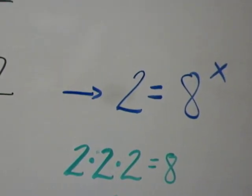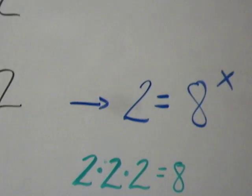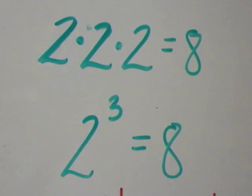Well, 2 times 2 is 4, times 2 is 8. Oh, that means I need 3 twos. In other words, 2 to the third power is equal to 8.